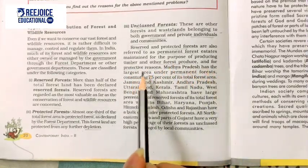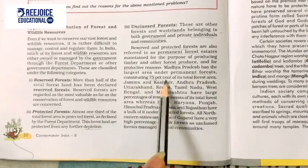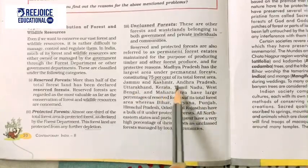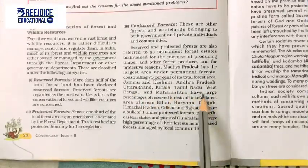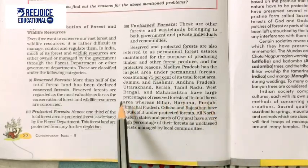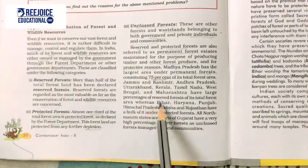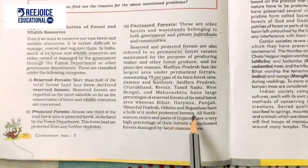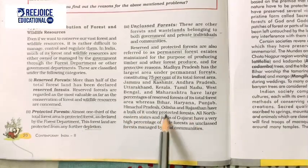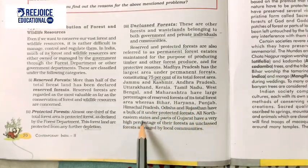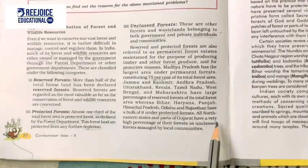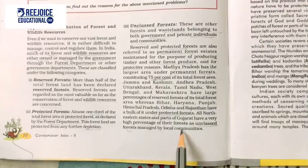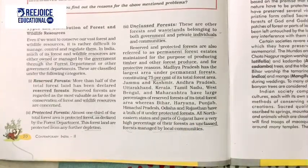The largest area under permanent forests, constituting 75% of total forest area, is in Jammu and Kashmir, Andhra Pradesh, Uttarakhand, Kerala, Tamil Nadu, West Bengal, and Maharashtra. Bihar, Haryana, Punjab, Himachal Pradesh, Odisha, and Rajasthan have a bulk of their forests under protected forests. All northeastern states and parts of Gujarat have a very high percentage of their forests as unclassed forests managed by local communities.